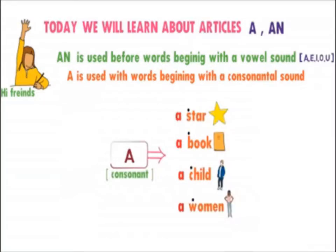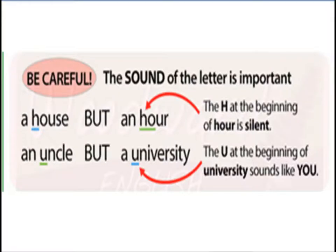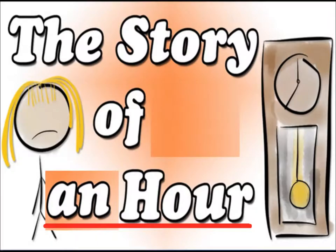A star, a book, a child, a woman — word starting with consonant से पहले 'a' आता है। लेकिन अगर 'h' silent है और 'o' की आवाज़ आ रही है, तो हम 'an' लगाएंगे — जैसे 'an hour'। और जहां vowel है लेकिन sound 'you' जैसी है, जैसे university में, तो 'a' आएगा।